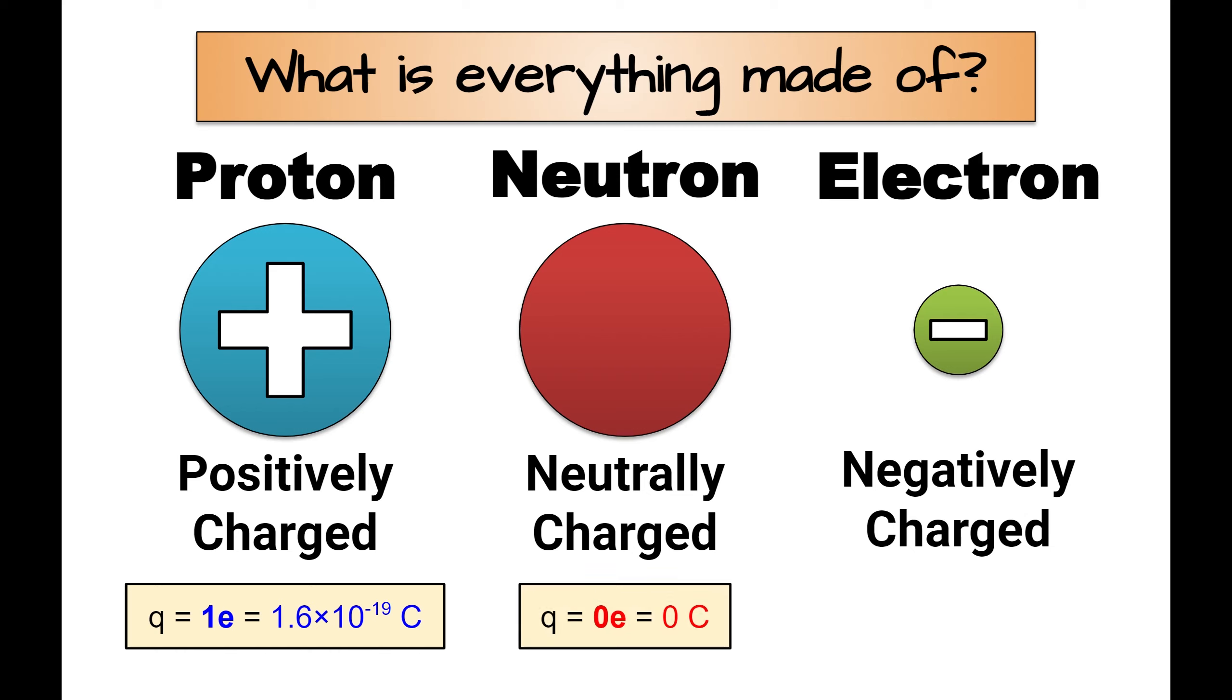A neutron does not have any charge at all because it's neutral. So Q, or charge, for a neutron equals zero E, or zero coulombs. And finally, the exact charge of an electron could be described as negative 1E, which means it's the elementary charge times negative 1. In coulombs, this would be negative 1.6 times 10 to the negative 19 coulombs.